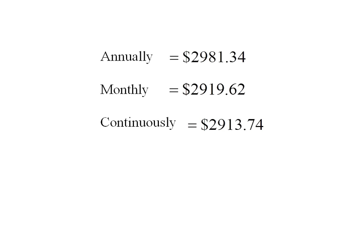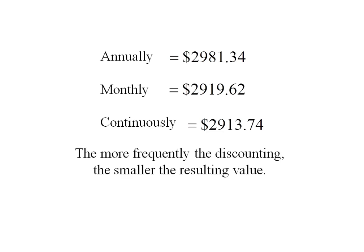Comparing when I take that $5,000 and want to know its present value: discounting annually I get $2,981, discounting monthly I get $2,919, and discounting continuously I get $2,913. The moral of the story here is the more frequent the discounting, the smaller the resulting present value.